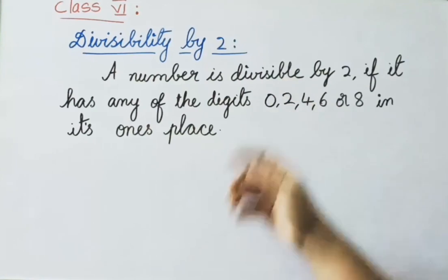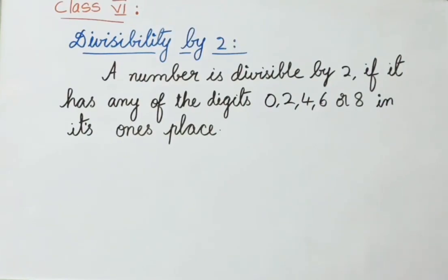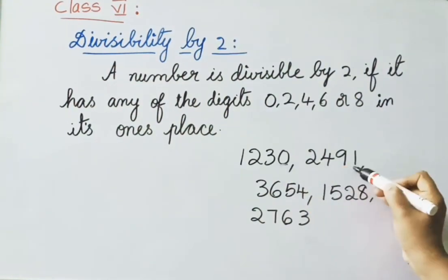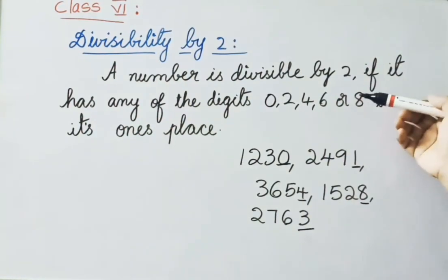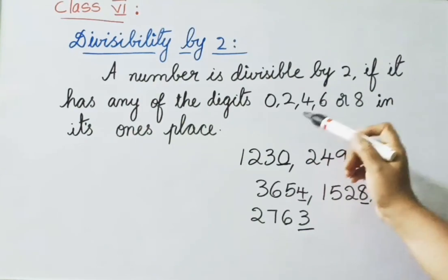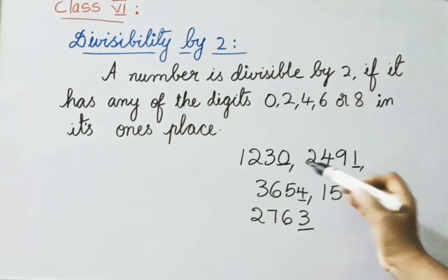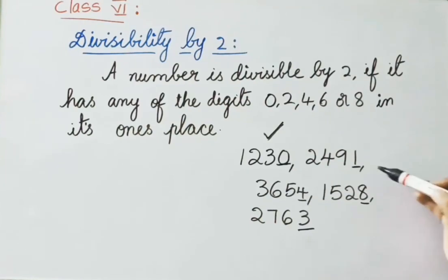Divisibility by 2: A number is divisible by 2 if it has any of the digits 0, 2, 4, 6, or 8 in its ones place. Observe these numbers — verify the ones place value of each. According to the rule, if ones place has 0, 2, 4, 6, or 8, the number is divisible by 2. For example, a number with 0 in ones place is divisible by 2. The number 2491 has 1 in ones place, so it is not divisible by 2.